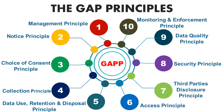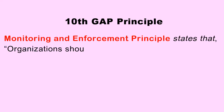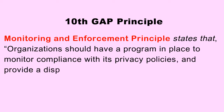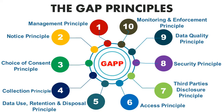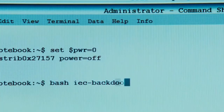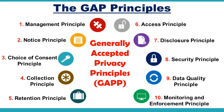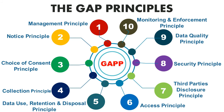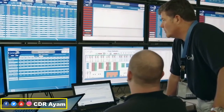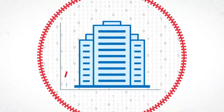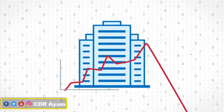The tenth and final GAPP principle is the Monitoring and Enforcement principle, which states that all organizations should have a program in place to monitor compliance with privacy policy and to provide dispute resolution mechanisms. In simple terms, all organizations gathering digital information are required to monitor and enforce the GAPP principles and any other data privacy compliance policies. With knowledge of these GAPP principles, you as a data owner, cybersecurity professional, and data custodian will know your rights regarding your digital information being gathered, as well as the core mandate of organizations gathering your digital information.